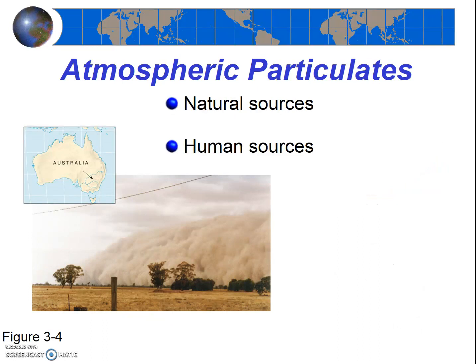The atmosphere also contains tiny solids and liquids that are small enough to stay suspended in the air. We call these tiny suspended solids and liquids particulates — another term for particulates is aerosols. Most people are familiar with liquid aerosols, as we have all used an aerosol spray of some sort. In the atmosphere, there are numerous specific types of particulates. Some of the most familiar include liquid and solid particulates that form clouds, rain, sleet, snow, and hail. Dust, pollen, ash, and smoke suspended in the air are also particulates. Notably, particulates can have both natural and anthropogenic — human — sources.